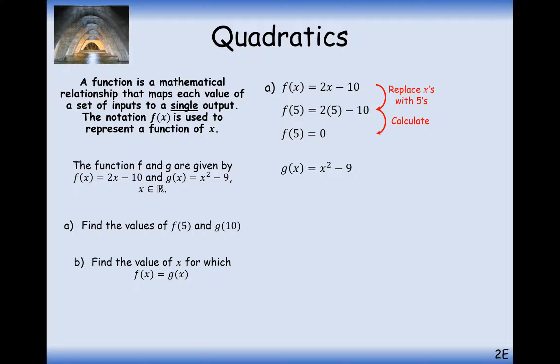The same for g of x. So this time we want to work out g of 10. So in this case here, we put 10 into our function where the x's go. So that's going to be 10 squared is 100, take away 9, and you get 91.